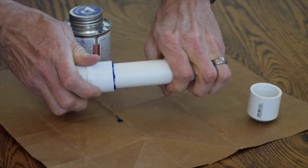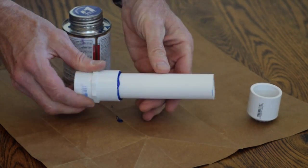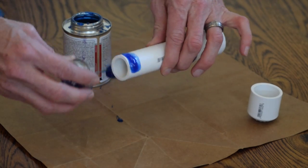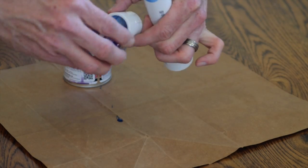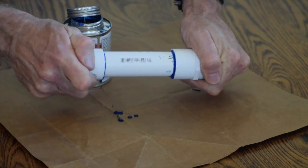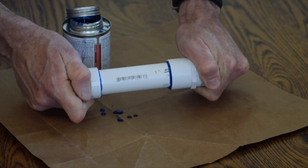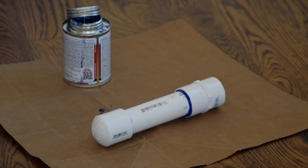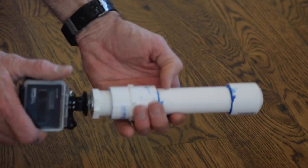When gluing on the threaded adapter you will want to make sure that the glue does not run down onto the threads. Glue on the threads makes it really hard to screw the plug in later on. Also you want to be as clean as you can with the glue so the finish on the hand grip is clean.